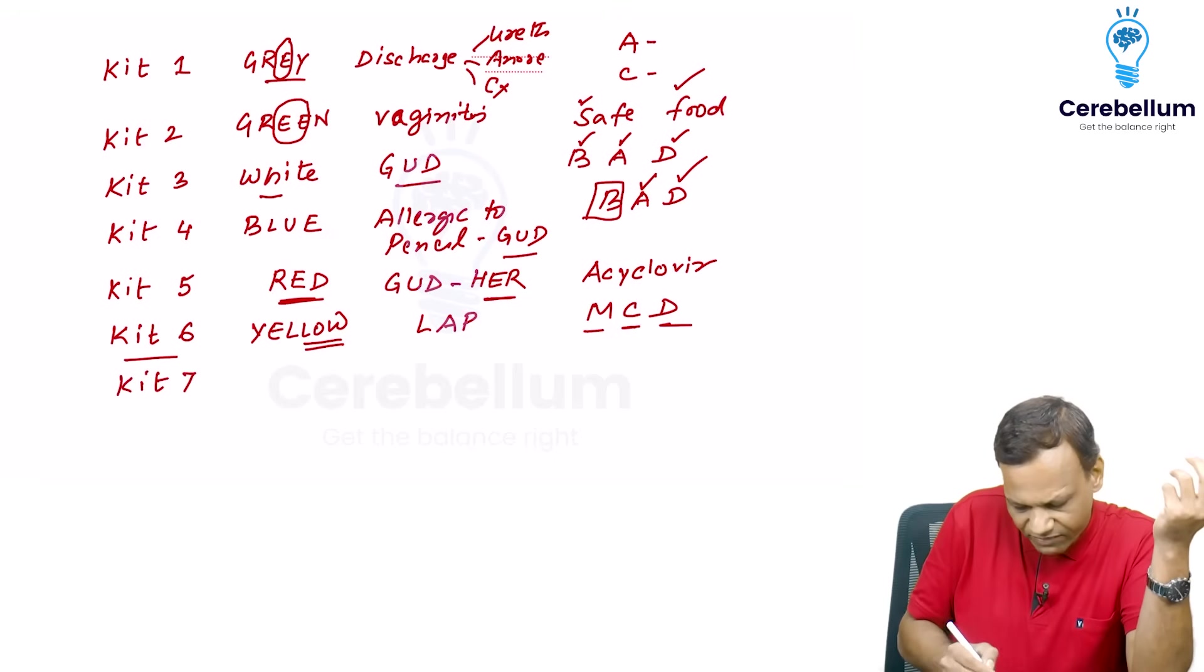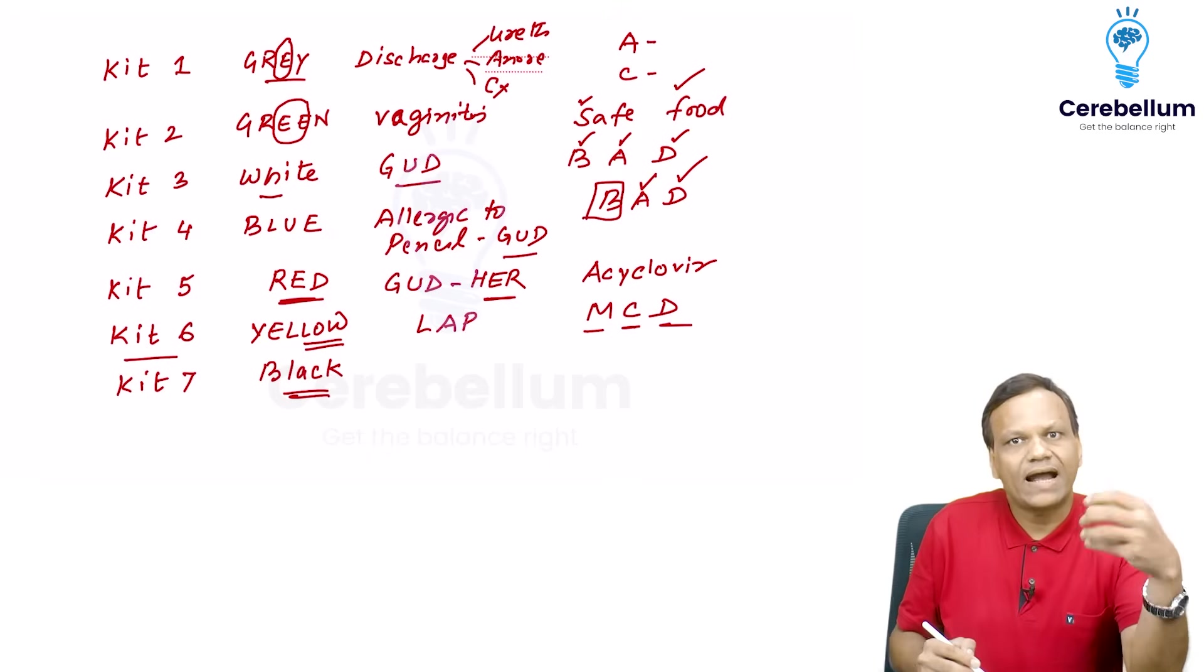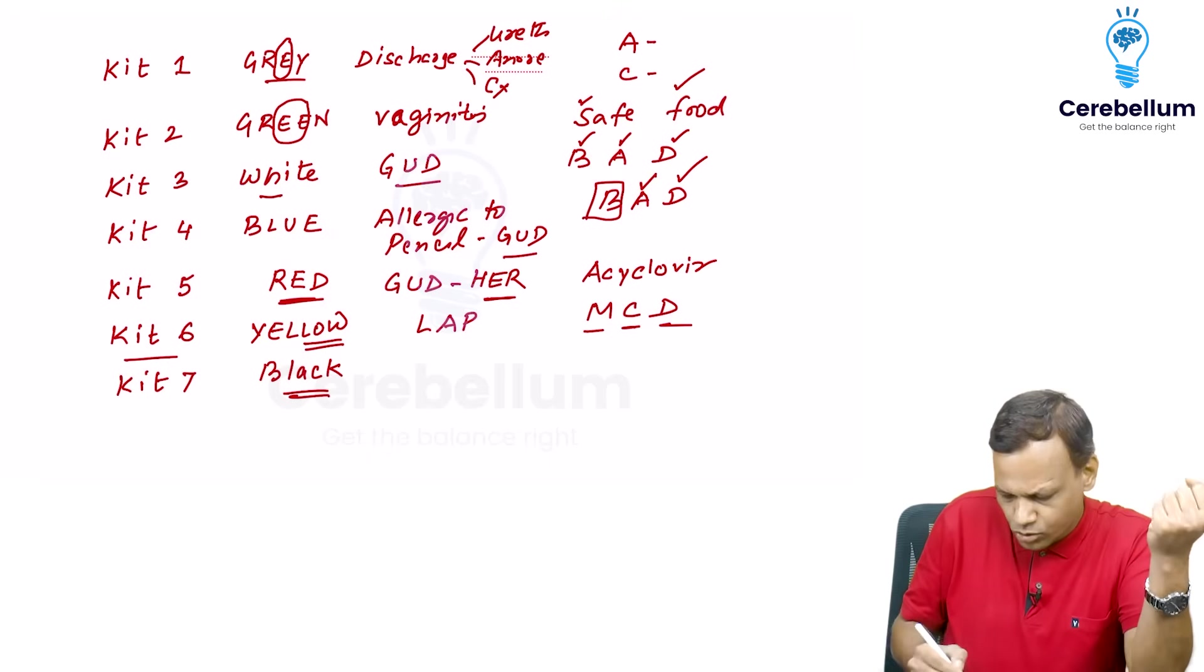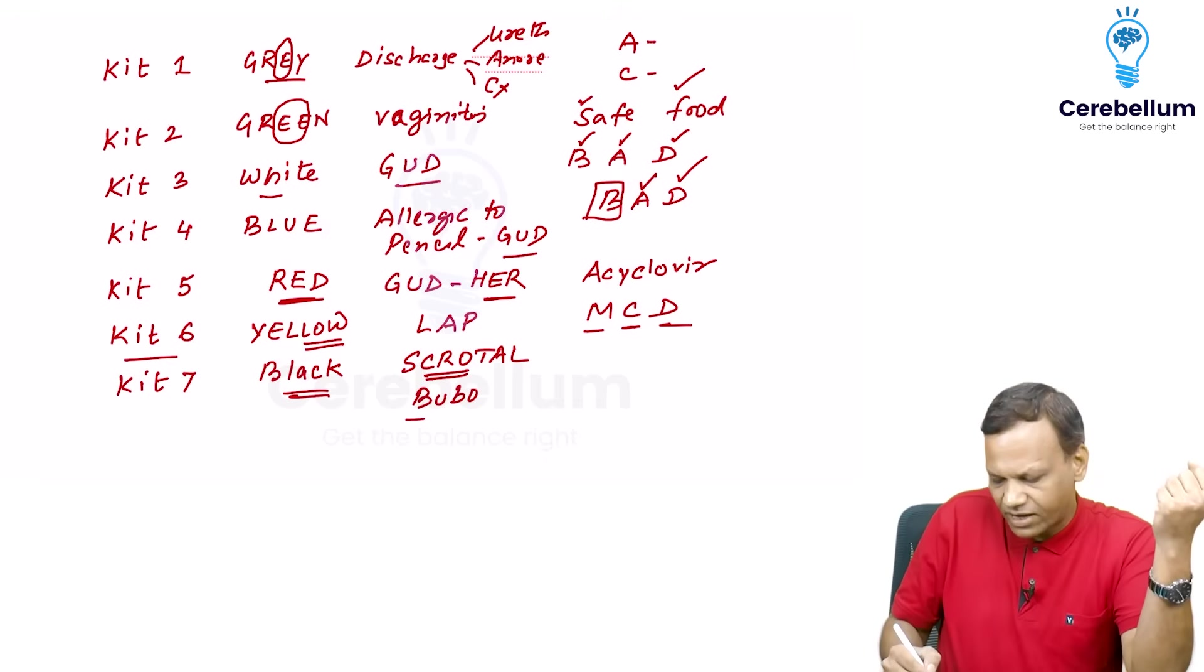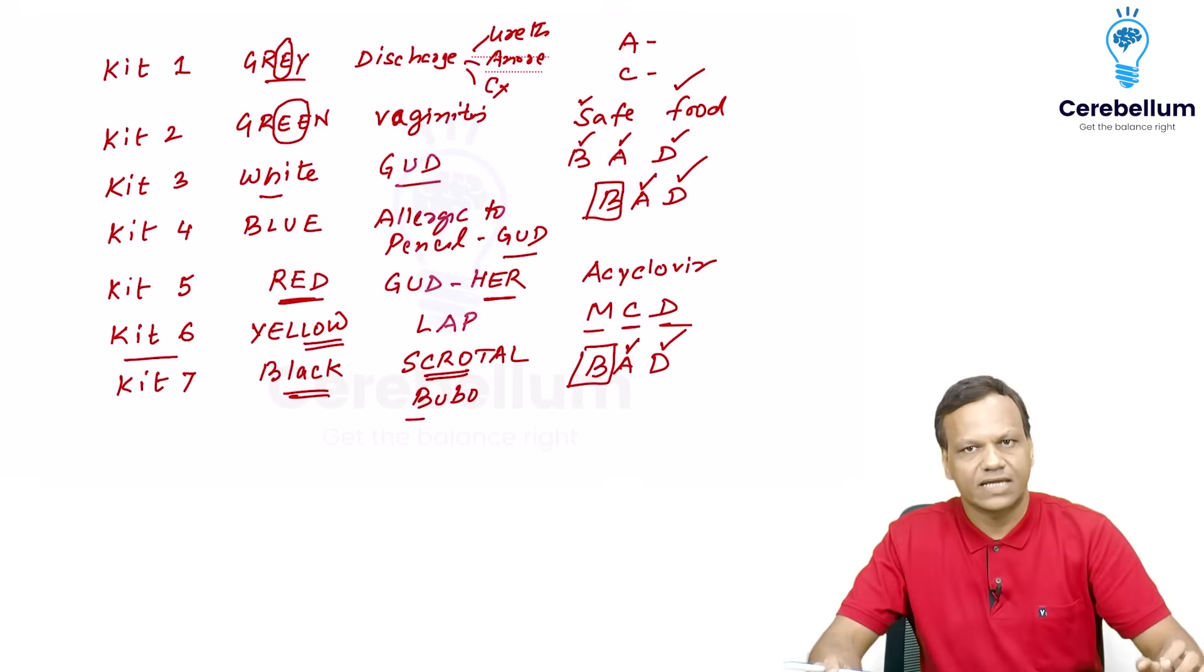Then kit 7. Kit 7 is black. We know black crow. Black is crow. So it is for scrotal swelling. Scrotal swelling. So crow or we can say inguinal bubo. Bubo B for black. And whenever there is blue or black there is something bad. So black also contains azithromycin and doxycycline.